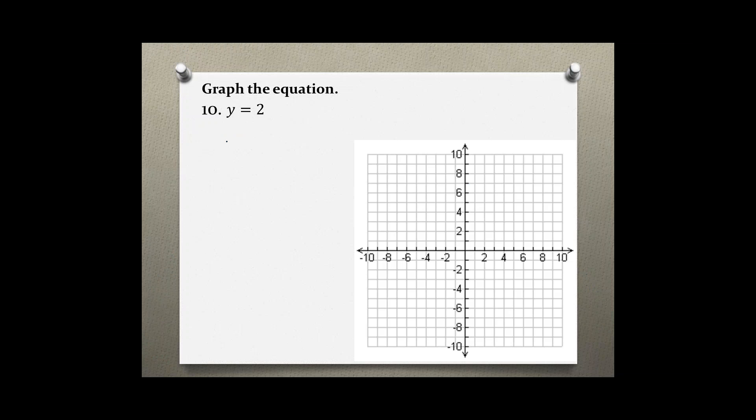Like we did in the previous problems, we could use a table of values to help us graph. The minimum we need to graph a line is 2 points.